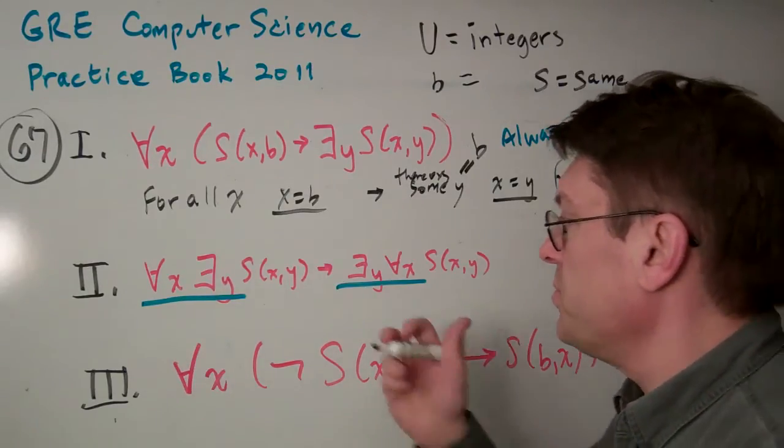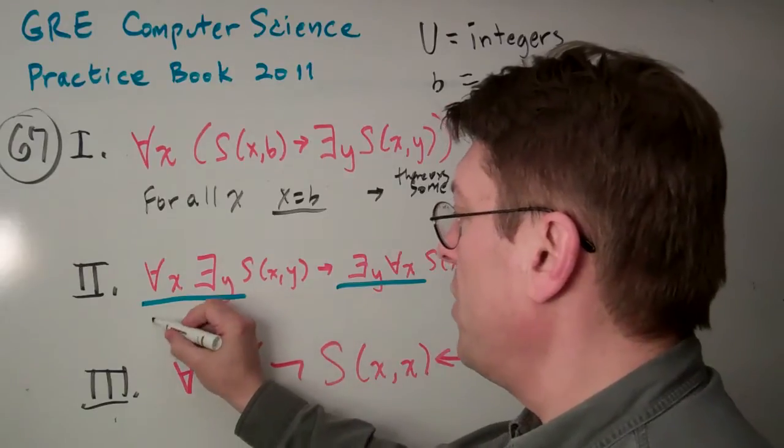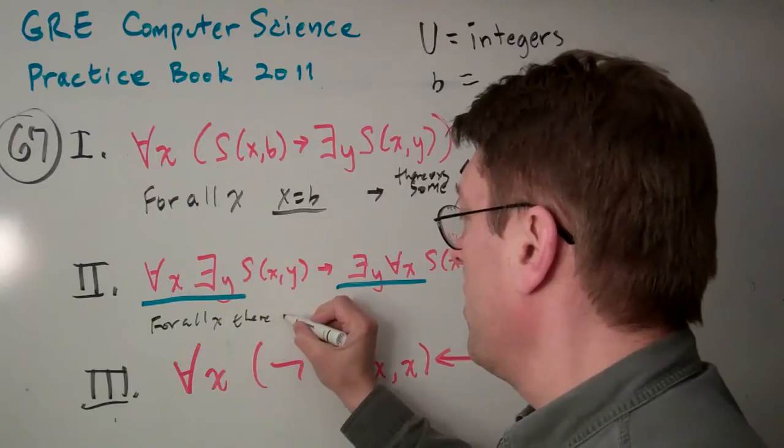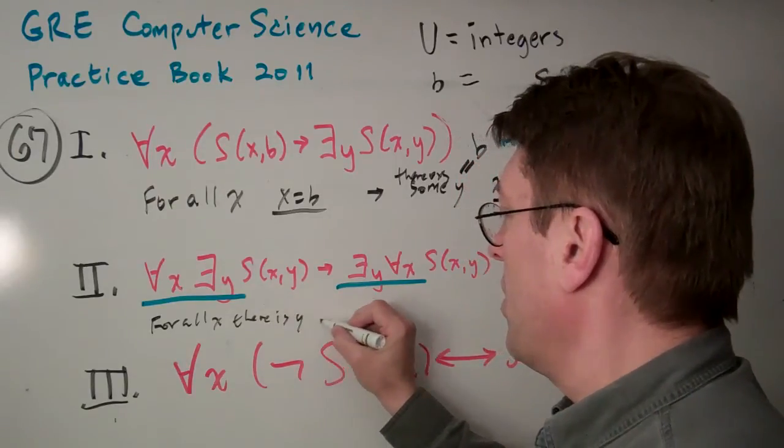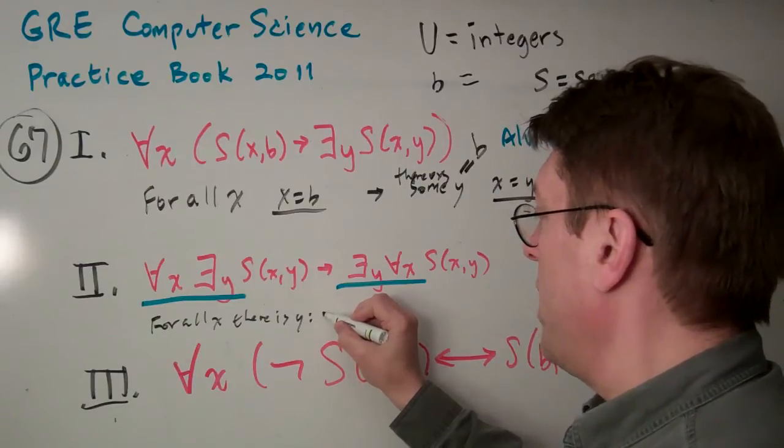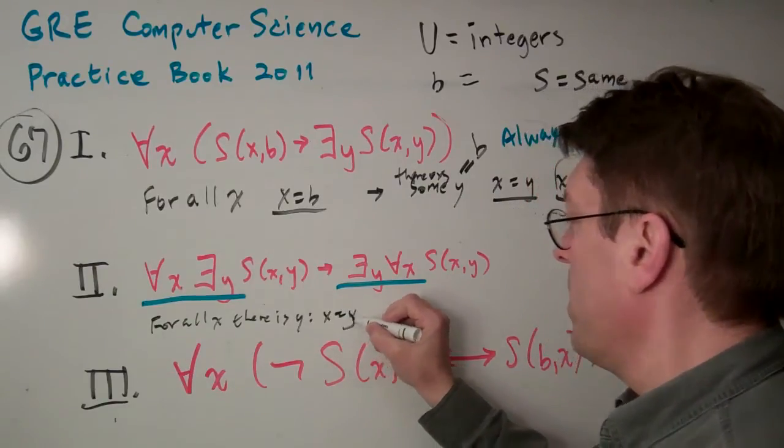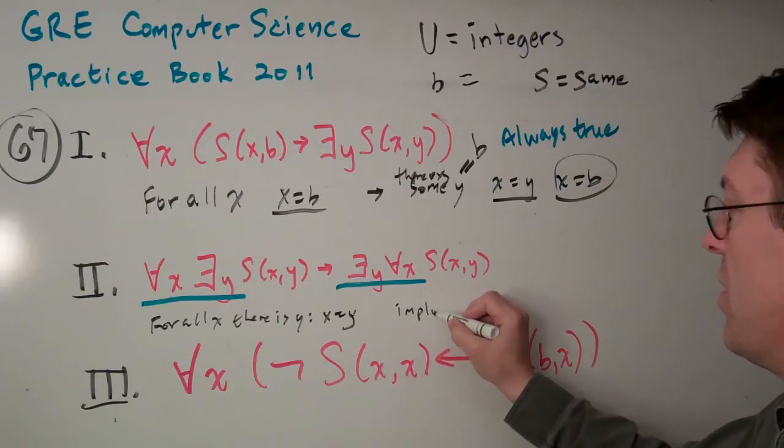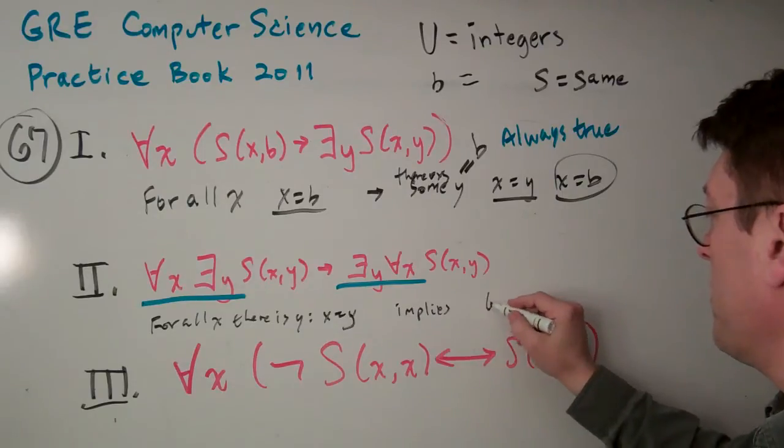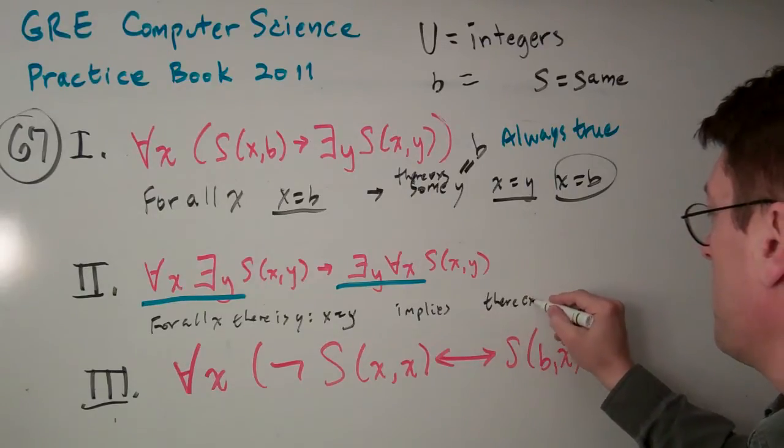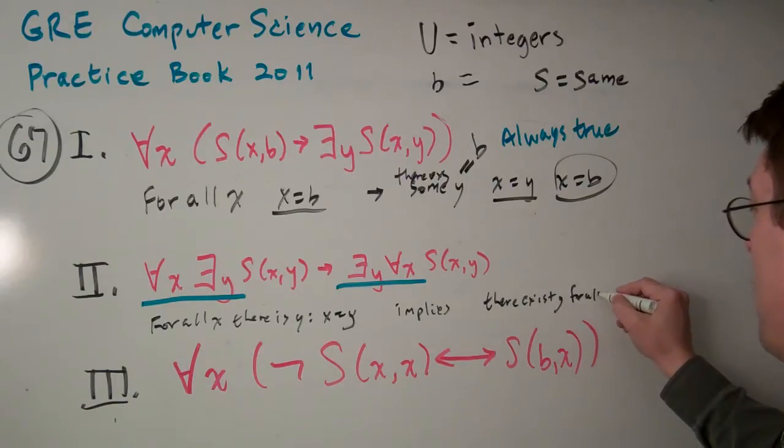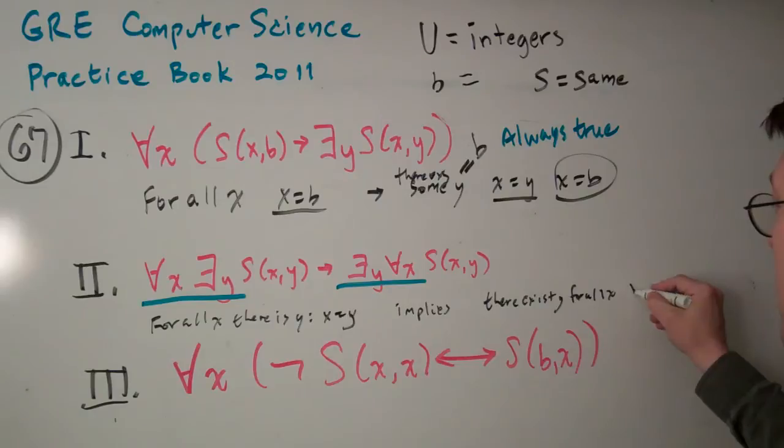Now, let's take a look at number two. Here we're saying for all X, there exists a Y where X equals Y. And that implies that for all, sorry, there exists a Y that for all X, X equals Y.